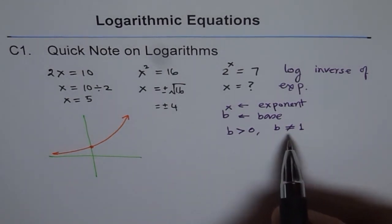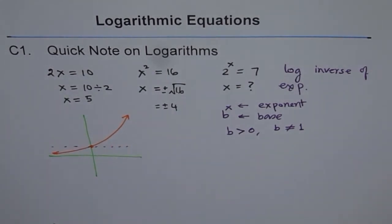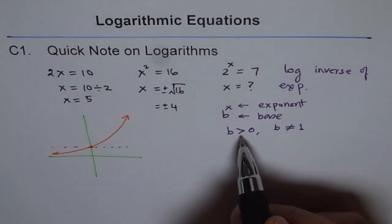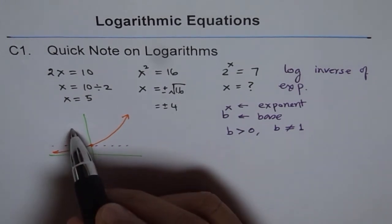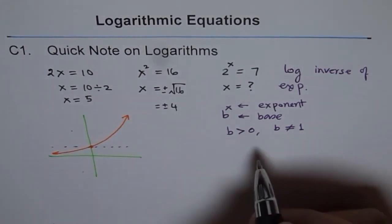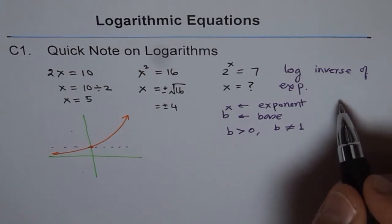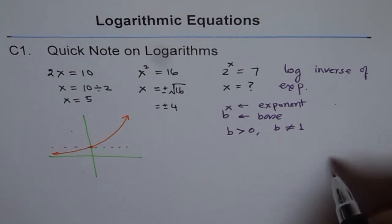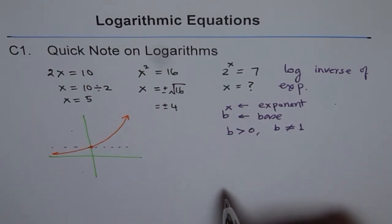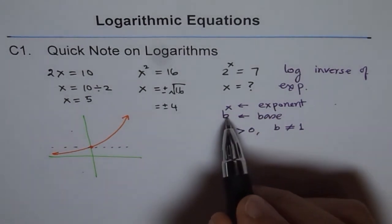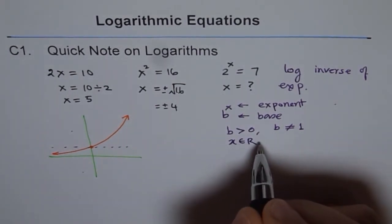The properties of b are: b must be greater than 0, and b is not equal to 1. If b is 1, then 1 to the power of anything is just 1, so it would be a flat line — not an exponential function. And if b is less than 0, say negative 2, even exponents give positive values and odd exponents give negative values — negative 2 squared is positive 4, but negative 2 cubed is negative 8 — so it is not a continuous function. Therefore, the base must always be greater than 0 and not equal to 1. The domain of the exponential function is all real numbers.